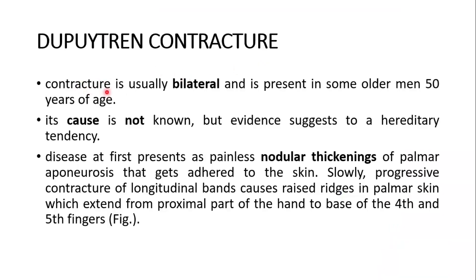Contracture is usually bilateral, present on both sides, and is present in some men older than 50 years of age. Its cause is not known, but evidence suggests a hereditary tendency.